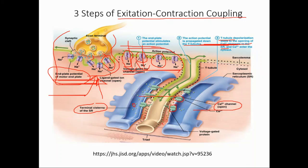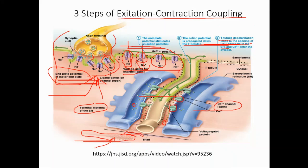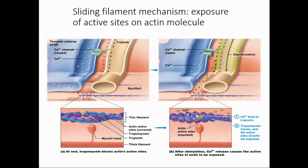The calcium liberated into the cytoplasm is where the myosin and actin filaments are located. The calcium binds to troponin on the actin filaments, eliciting the exposure of the actin active sites, which then allows the cross-bridge formation and contraction. That is the mechanism we described earlier.